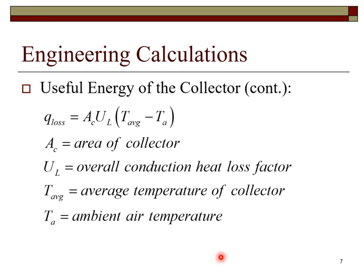Here we continue the development of the equations. The heat loss is equal to the area times the heat loss coefficient U sub L times the average temperature of the solar thermal collector minus the ambient temperature.